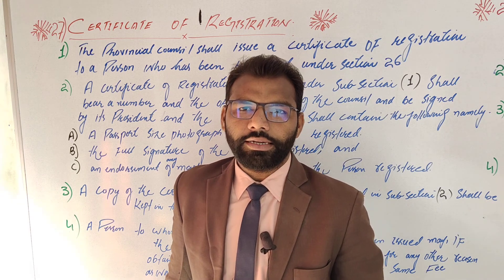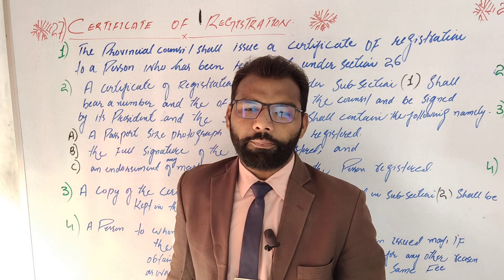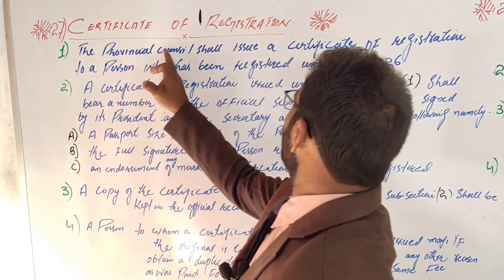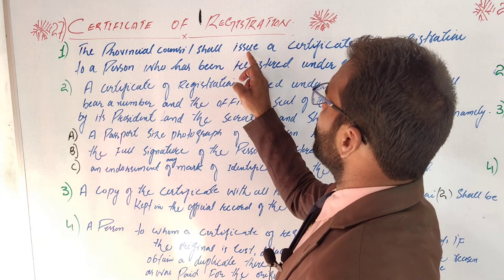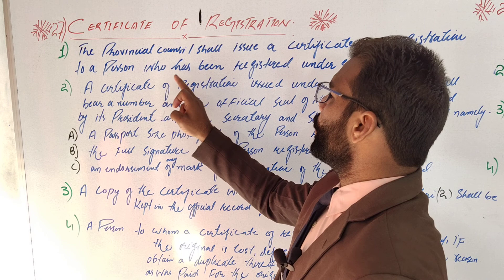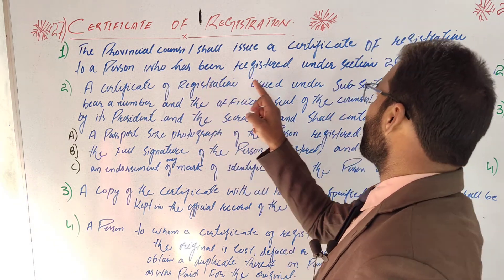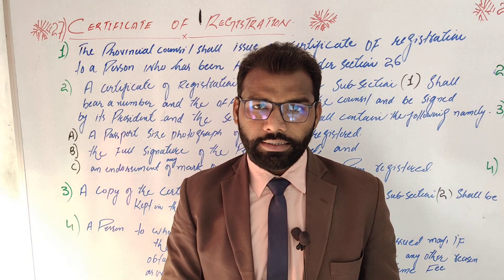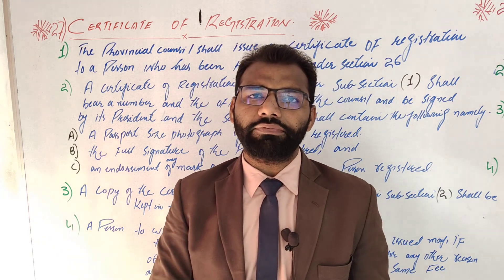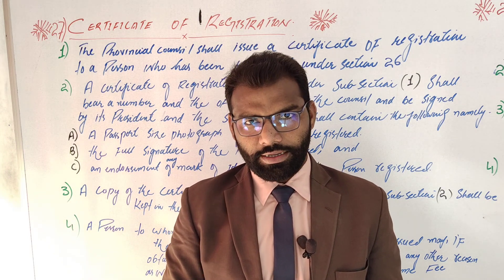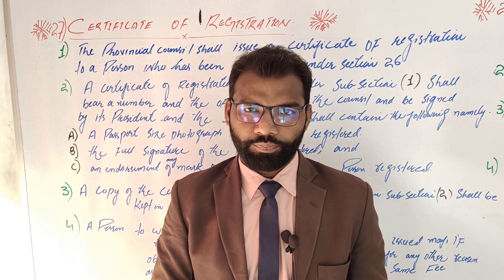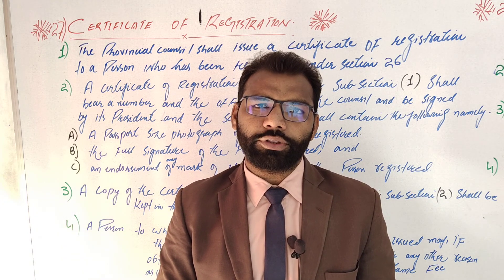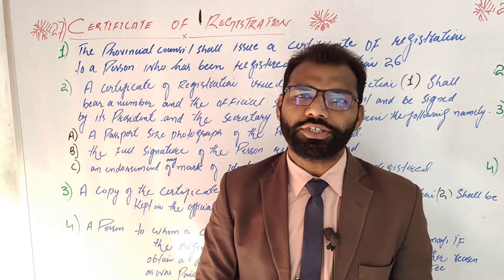Subsection 1: The provincial council issues a Certificate of Registration to a person who is registered under Section 26. Section 26 was about the Procedure of Registration. When the procedure of registration is complete, the provincial council issues the Certificate of Registration.